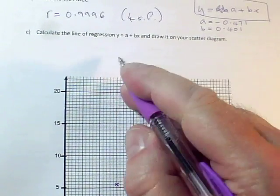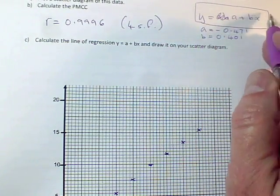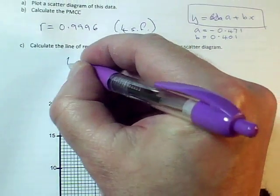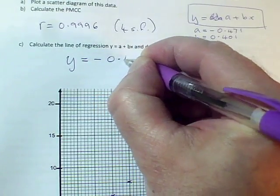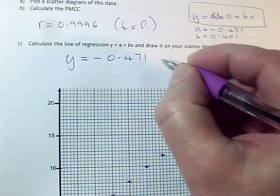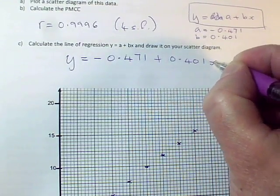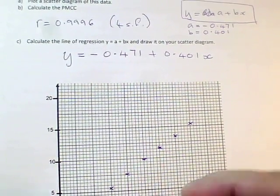And now I've got to get the line of regression. So I've got my values of A and B. But don't forget to write out the regression of the equation in the form Y equals A plus BX. So I need to say Y equals A, which is minus 0.471, plus BX, which is 0.401 times X.